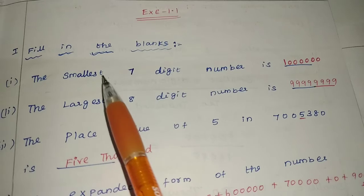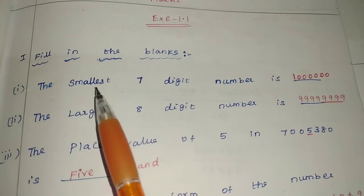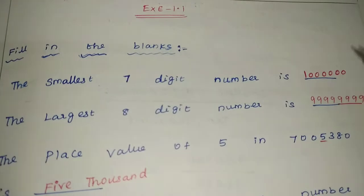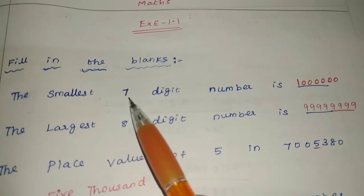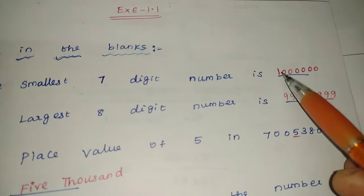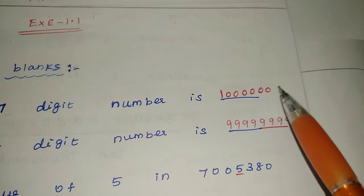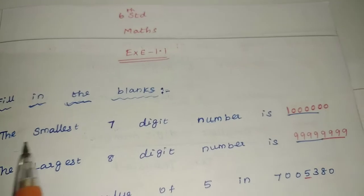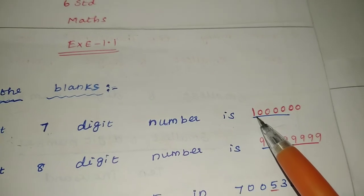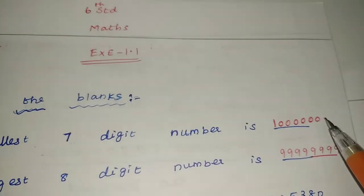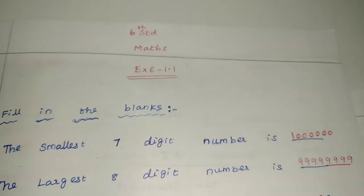So, the first part is the smallest number. The smallest number starts with 1, followed by zeros. The easy answer for the smallest 7-digit number — what value does it have? It is 10 lakhs. 10 lakhs means 1 followed by zeros: 1, 10, 100, 1,000, 10,000, and 10 lakhs. So the smallest 7-digit number is 10,00,000. Clear?